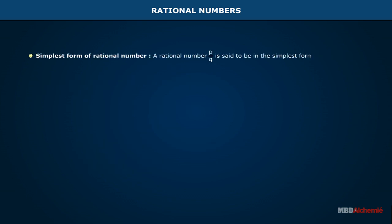Simplest form of rational number. A rational number p by q is said to be in the simplest form if q belongs to N and p and q have no common factor other than 1.